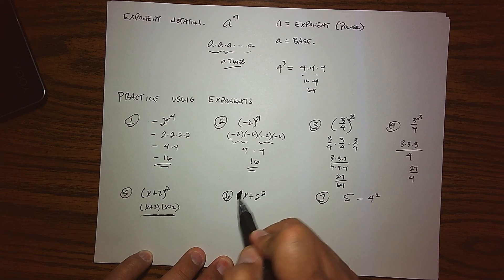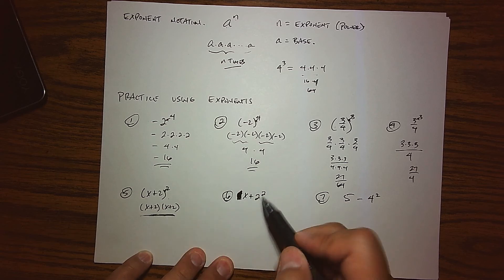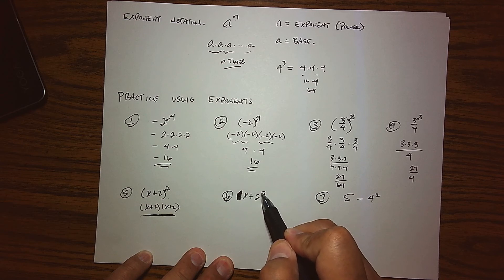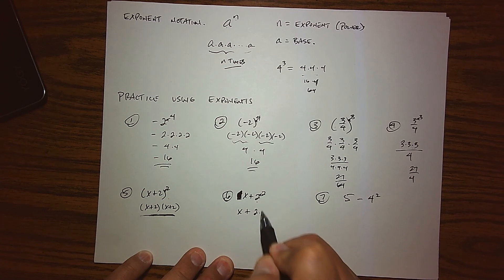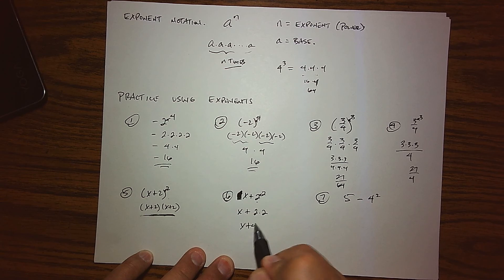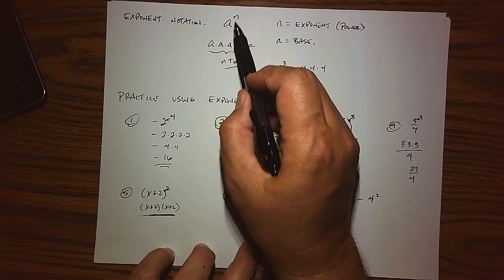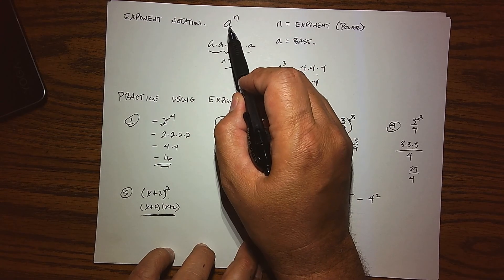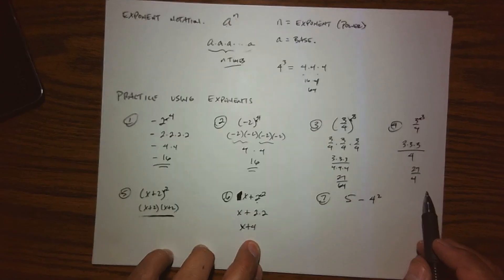The next one has the same expression but with no parentheses. The exponent 2 is sitting right on top of the 2, so that 2 is the only base. We have x, and we're taking 2 and multiplying it by itself — 2 times 2, which we can simplify to 4, giving us x plus 4. This again shows the importance of identifying what is serving as the base.